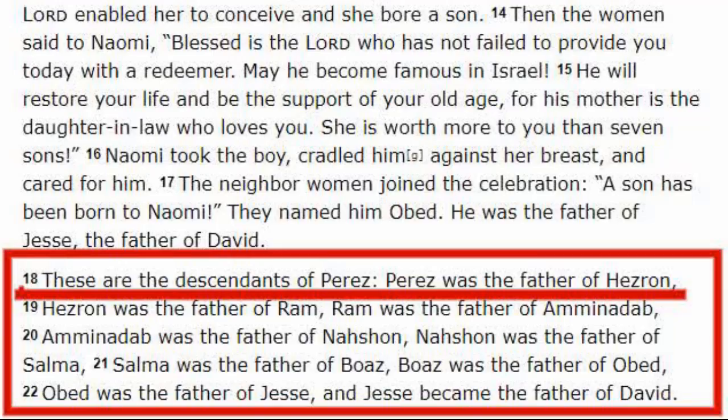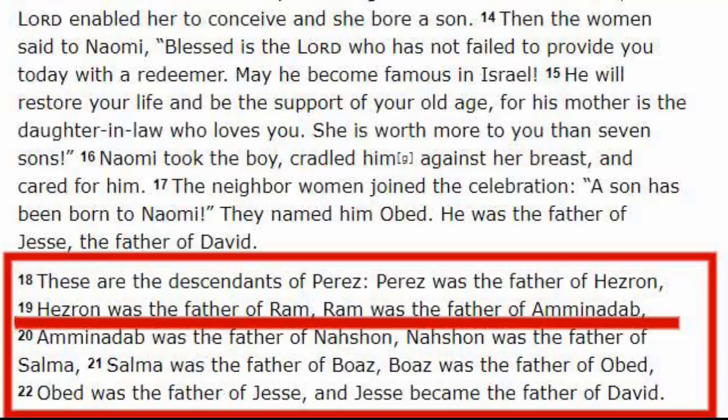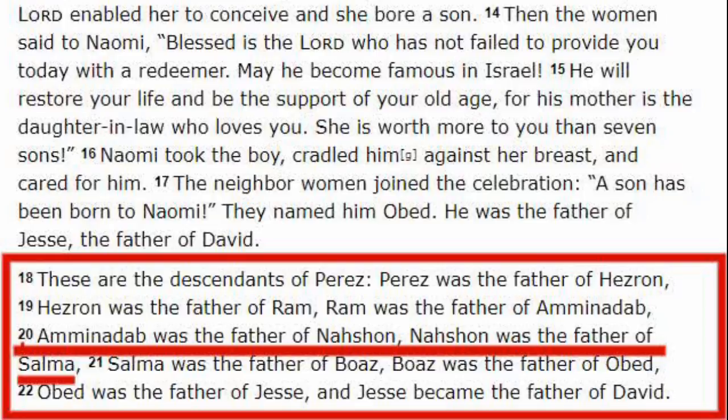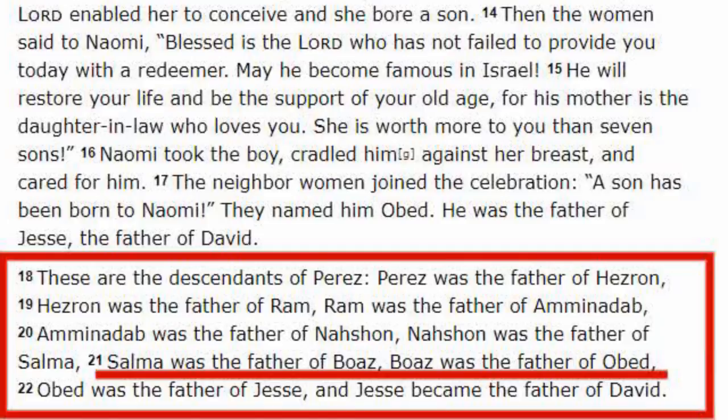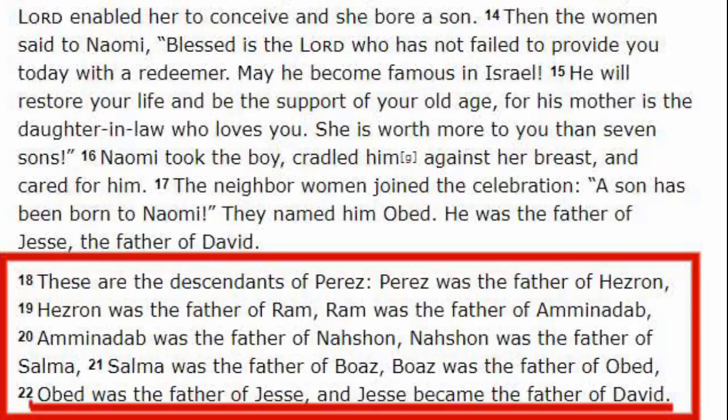It reads: These are the descendants of Perez. Perez was the father of Hezron, Hezron was the father of Ram, Ram was the father of Aminadab, Aminadab was the father of Nishon, Nishon was the father of Salma, Salma was the father of Boaz, Boaz was the father of Obed, Obed was the father of Jesse, and Jesse became the father of David. The manner of narration started from the ancestor down to the posterity.